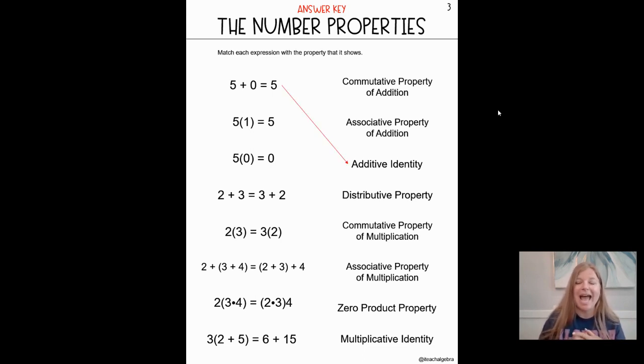Whereas in the second problem, five times one equals five, we know that multiplying anything by one always results in the same answer. Just like adding zero results in the same answer. So if five plus zero equals five is the additive identity, that means that five times one, which equals five, is what do you think? I hope you guessed it. It's the multiplicative identity. Multiplying any number by one is going to result in the identical answer.